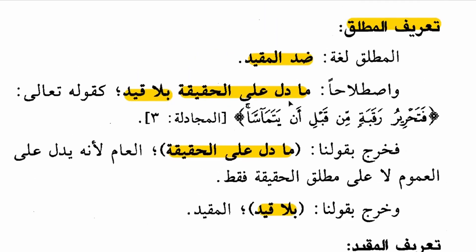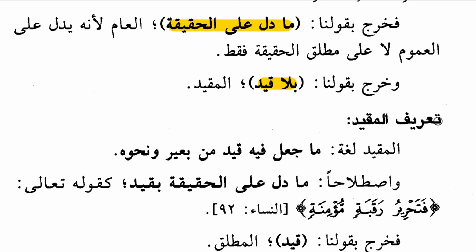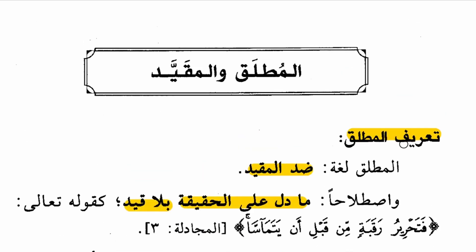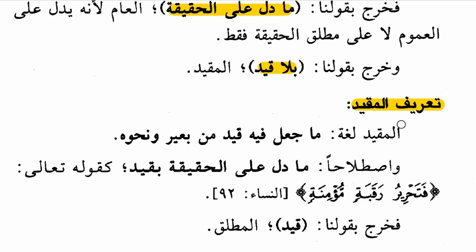That completes the definition. The sheikh then adds clarifying points and moves to the definition of muqayyad. Notice that mutlaq and muqayyad are mentioned together, just as 'aam and khas are mentioned together. The definition of muqayyad: linguistically, muqayyad is that which has a restraint placed on it — like a camel with a rope — or something similar to it.